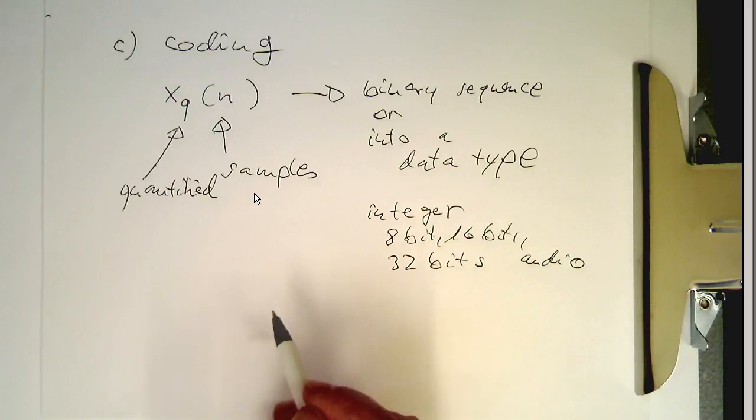So we had three steps. The first one is sampling, the second one is quantization, and the third one is coding.